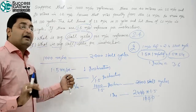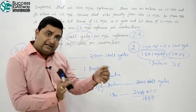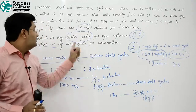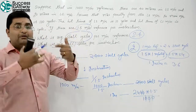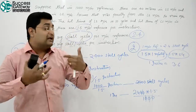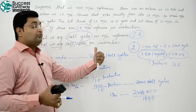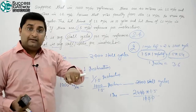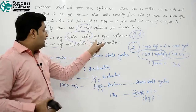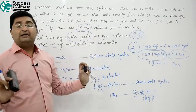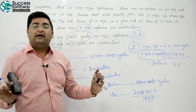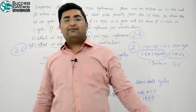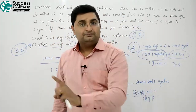So the pattern to remember is: first calculate total stall cycles, then if the question asks per memory reference, divide by the number of memory references. If it asks per instruction, apply the memory references per instruction factor accordingly.